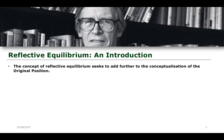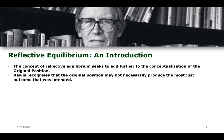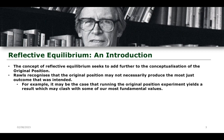What the concept of reflective equilibrium seeks to do in Rawls's political philosophy is to further add to the conceptualization of the original position, because Rawls doesn't just suggest that the original position is the perfect way in which society may be ordered. On the contrary, he argues that the original position may not necessarily produce the most just outcome that was intended. He argues there could be a situation where the original position does not create the ideal society for the most amount of people, and it may be the case that running this thought experiment could yield a result which may clash with some of our most fundamental and deeply held values.